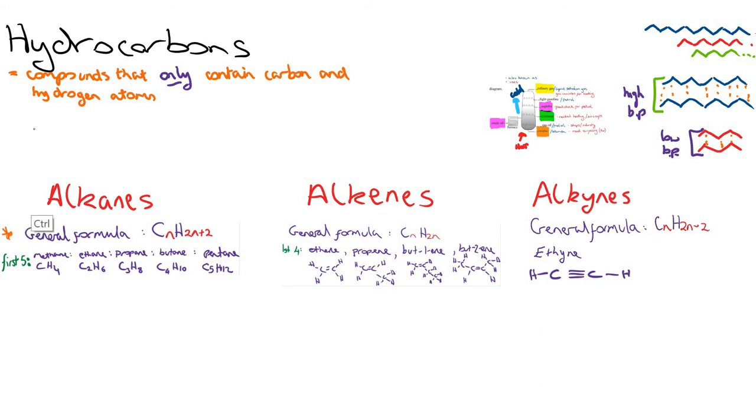So the first homologous series we'll come to is the alkanes. The alkanes are the molecules that have just carbon and hydrogen single bonds. They're also known as saturated molecules - saturated because they just contain single bonds and there's no double bonds. Now, the general formula for the alkanes is CnH2n+2.